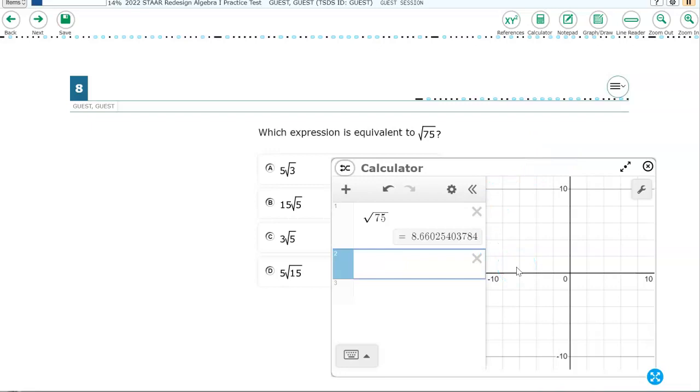All right. Now, we have four answer choices. Let's type in the first one. Type a 5. And then S-Q-R-T. And then type in the 3. So you have 5 square roots of 3. You will notice that the expression they gave you and this answer choice produced the same decimal. So they are equivalent. The correct answer is A.